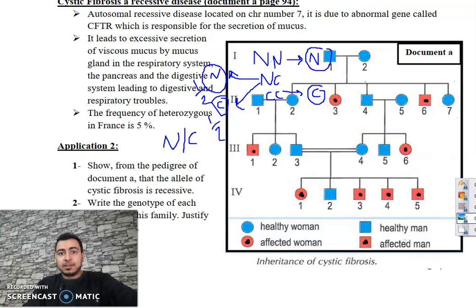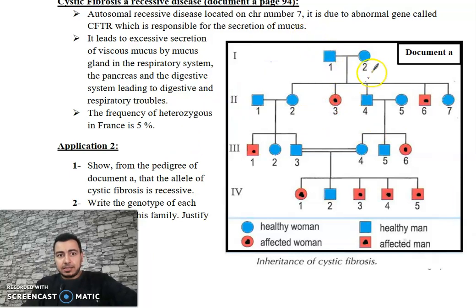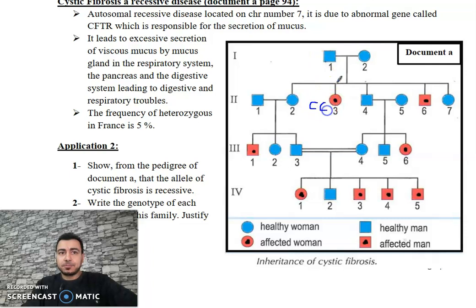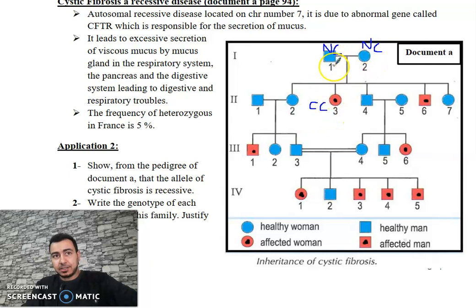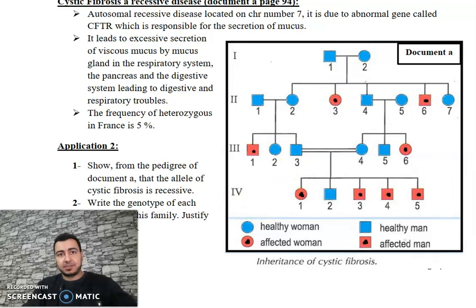Looking at the pedigree, the blue-colored individuals are affected. This affected individual is CC — they inherited C from each parent. Their parents appear phenotypically normal but carry allele C masked by allele N, so the genotype of each parent is NC, as explained in videos 1 and 2.